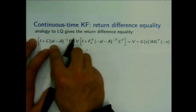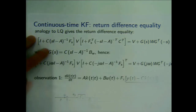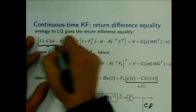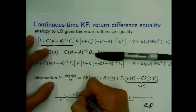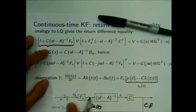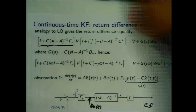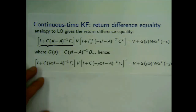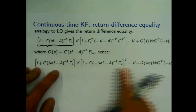I need two observations to show the Kalman filter achieves the best possible estimation. First, the continuous-time Kalman filter equation can be put in a closed-loop block diagram, very similar to the discrete-time case: x-hat with feedback F_S times (y - C·x-hat), plus B·u. Second, there is also a return difference equality for the continuous-time case.